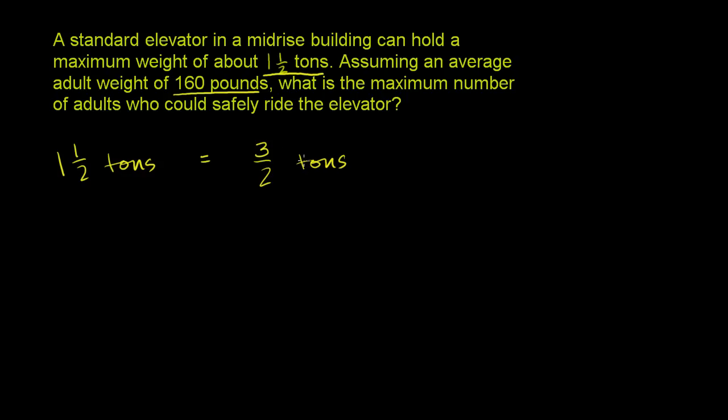So the maximum capacity is 3 halves tons. Let's think about how many pounds that is. To do that, we have to know that there are 2,000 pounds per ton. This wasn't given in the problem anywhere. This is something I knew from past experience. It's a good thing to know in general, that a ton is 2,000 pounds.